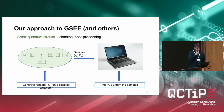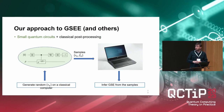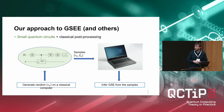The approach we take is very similar to other works — Samson's work, Earl Campbell's, and the Lin and Tong paper. We assume access to an initial state with decent overlap with the ground state, run controlled time evolutions with the Hamiltonian, and do simple generalized Hadamard tests. We run these circuits for different values of tau, use the highest tau as a proxy for circuit depth, collect samples, and post-process classically to get a ground state energy estimate.